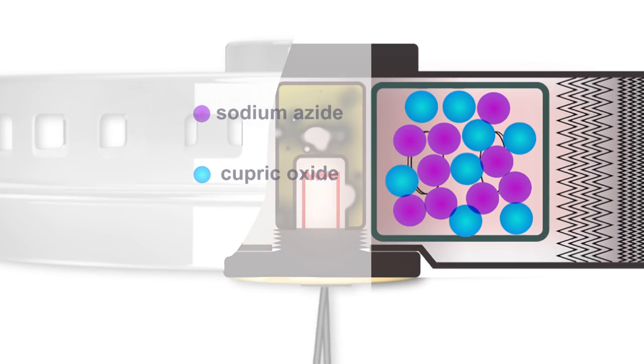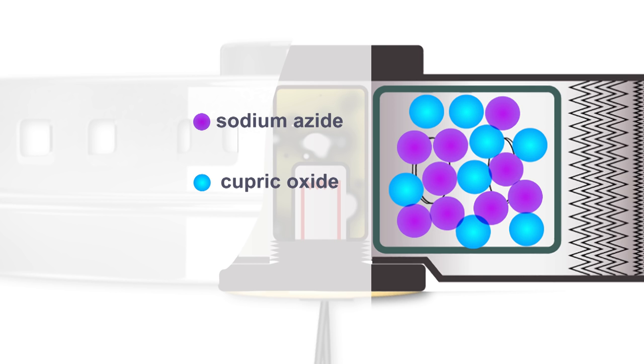Two separate chemicals make up the fuel for the gas generator: sodium azide and cupric oxide.